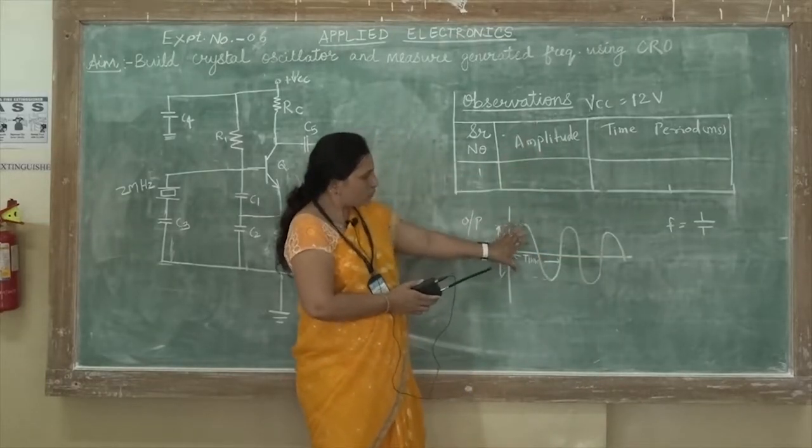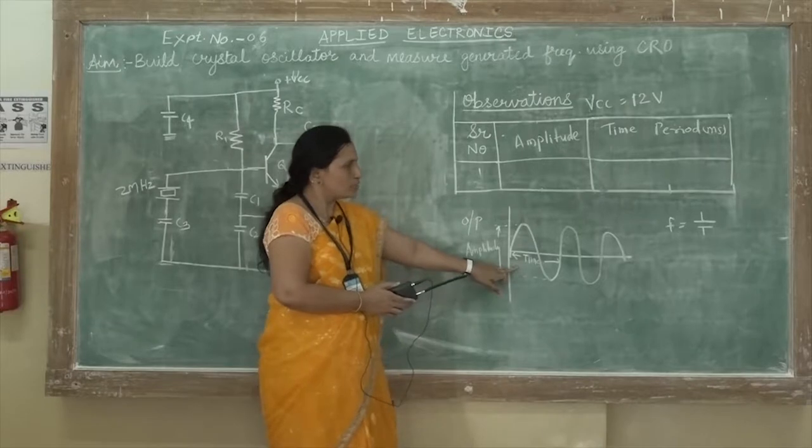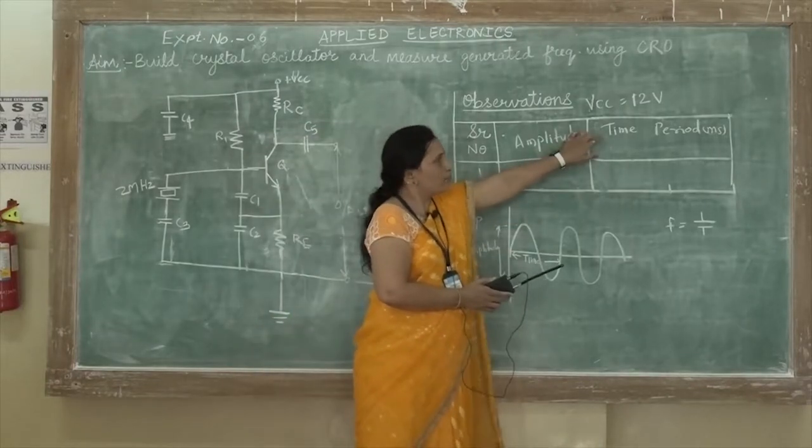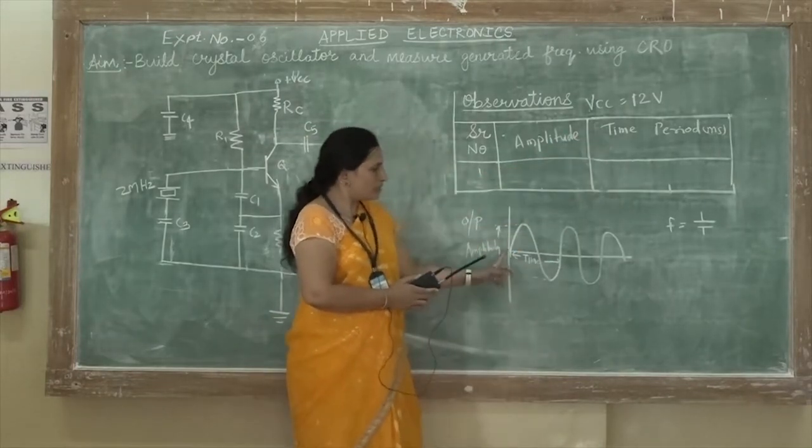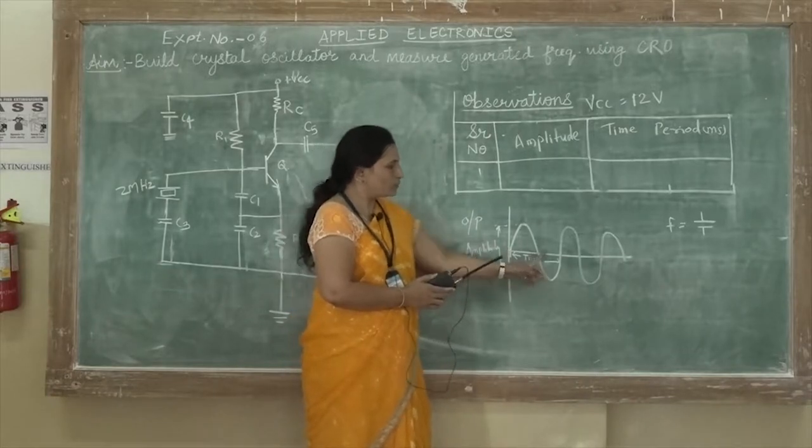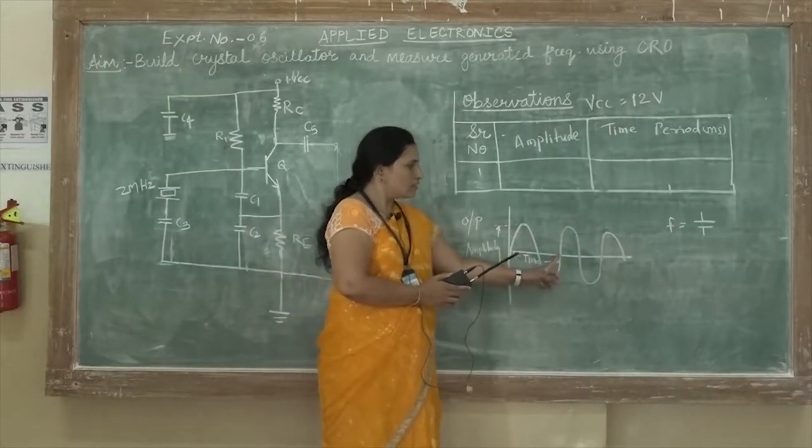You have to measure the amplitude, that is the peak to peak amplitude on the CRO by pressing the XY button and the time period. To measure the time period you have to calculate the time of the positive half cycle as well as negative half cycle.